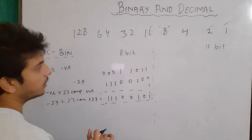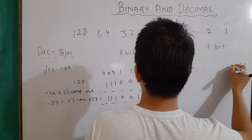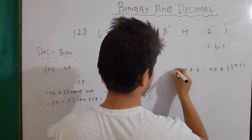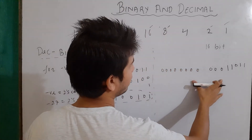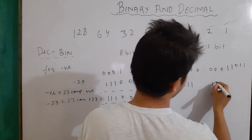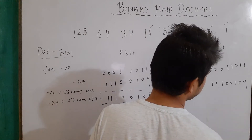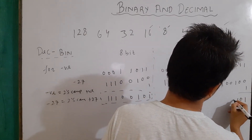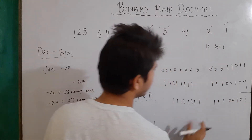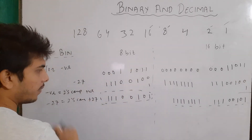For 16-bit, we first find the binary equivalent of positive 27 using 16 bits. Then we flip all the bits to get the one's complement, and add 1 to get the two's complement. The result is 1 0 1 0 0 1 1 1 1 1 1 1 1 1 1 1, which is the 16-bit binary equivalent for minus 27. The 8-bit version was shown earlier.